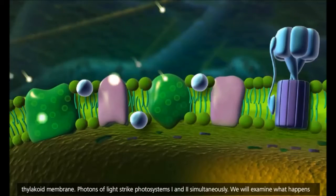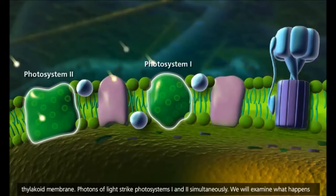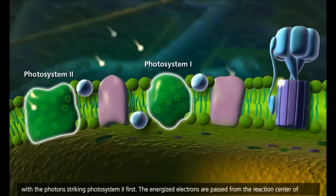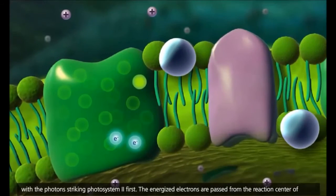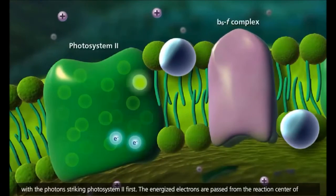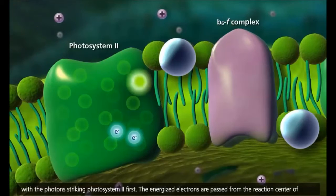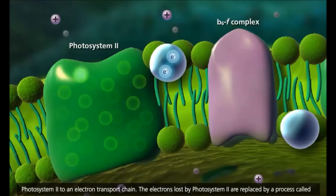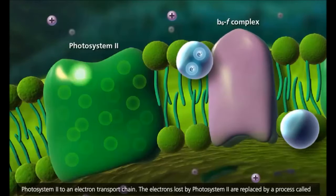Photons of light strike photosystems I and II simultaneously. We will examine what happens with the photons striking photosystem II first. The energized electrons are passed from the reaction-center of photosystem II to an electron-transport chain.